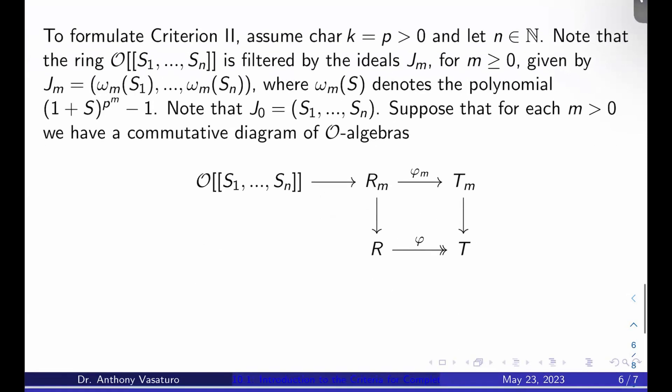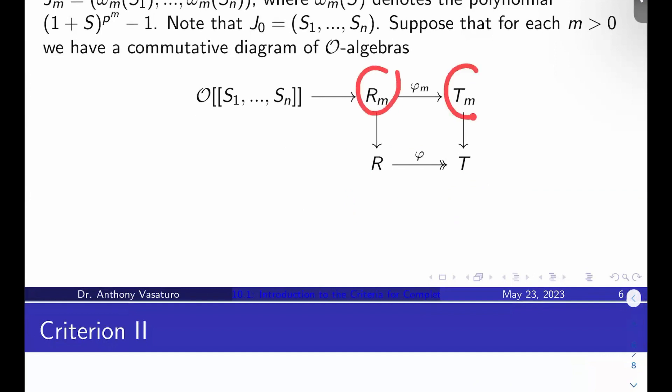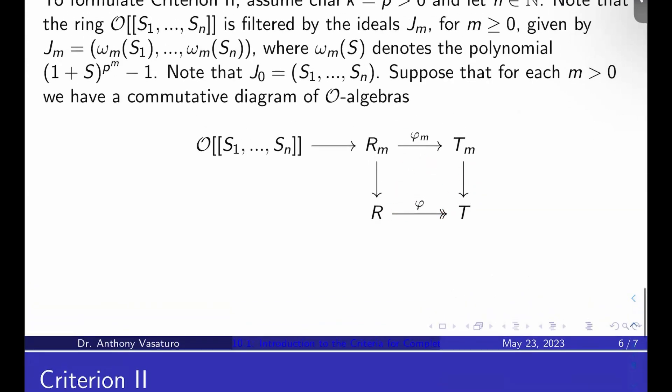What we're going to want to assume is that for each m positive, we have a commutative diagram of O-algebras that looks like this. So we've got our power series ring in the n variables S_1 through S_n here. We want a map from that to some R_m, and then we want a map from there called φ_m to some T_m for some O-algebras R_m and T_m. Whatever these are, we want a map from R_m to our original R and a map from T_m to our original T. And then we want this bottom map commuting the square here to be the surjective map φ from that commuting triangle before.